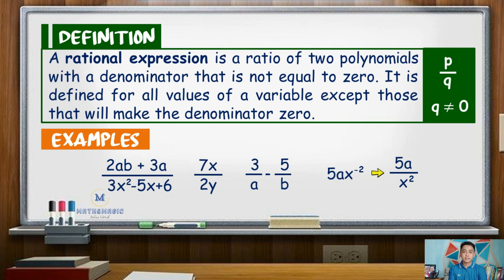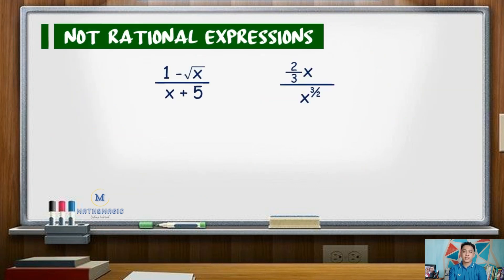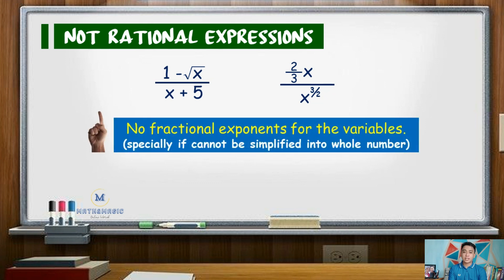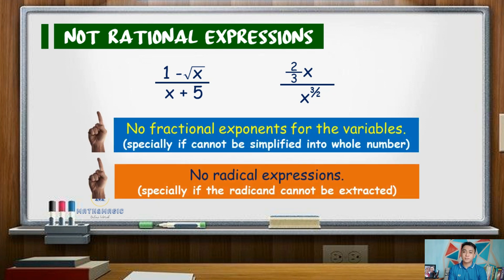On the other hand, the following are not rational expressions: 1 minus square root of X all over X plus 5; and 2/3 X over X raised to 3/2. We do not consider terms with fractional exponents and radicals as rational expressions, specifically if the variable in the radical cannot be extracted.